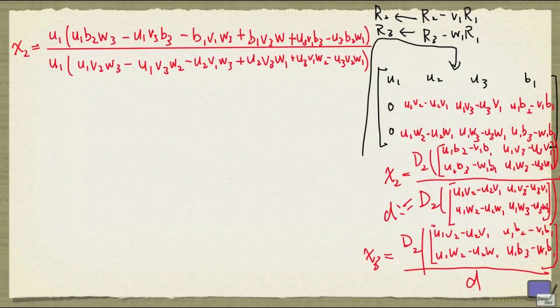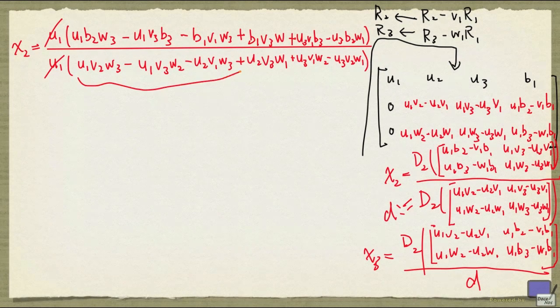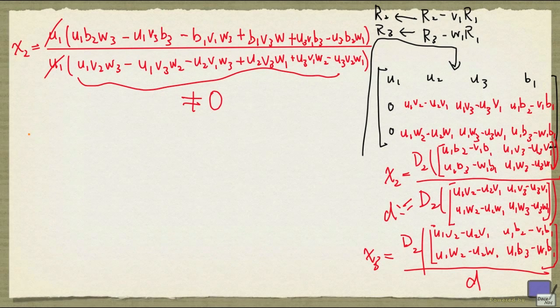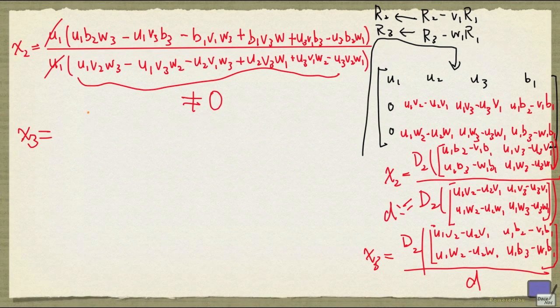So x2 is this. And as you can see, we can divide out u1. And this quantity here will have to be non-zero. Now we can write down a similar expression for x3, and the details will not be shown here.